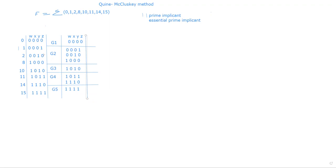This is the first step — arranging the minterms into groups based on the count of ones in their binary representation. Now the next step is to check for variables where only one variable changes between adjacent groups. Group 1 can be compared with Group 2, Group 2 with Group 3, Group 3 with Group 4, and so on. Group 3 cannot be compared with Group 5, and Group 1 cannot be compared with Group 4 — only adjacent groups can be compared.